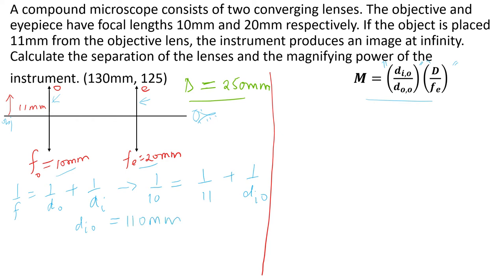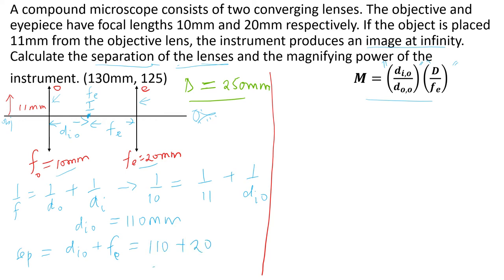Since the final image is at infinity, the intermediate image must be at the focal point of the eyepiece. From the diagram, the separation of the lenses equals d_image_objective plus the focal length of the eyepiece: 110 mm + 20 mm = 130 mm.